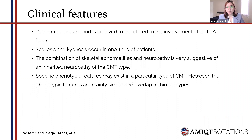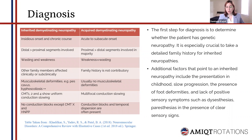Pain can be present but not always and is believed to be related to degeneration of delta-A fibers. Scoliosis and kyphoscoliosis occur in one third of patients, and if there is a skeletal abnormality with neuropathy it is very suggestive of an inherited neuropathy of CMT type. Specific phenotypic features may exist in particular subtypes of CMT, but phenotypic features are mainly similar and overlap within subtypes.